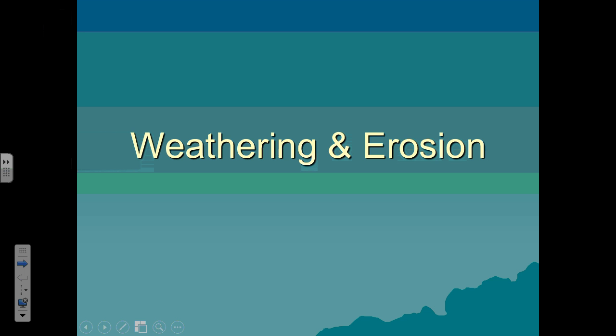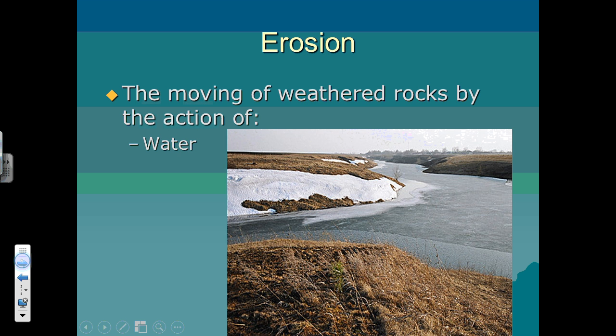One of the Montana science standards is to show how the earth changes, and one of the ways that the earth changes is through the process of weathering and erosion.